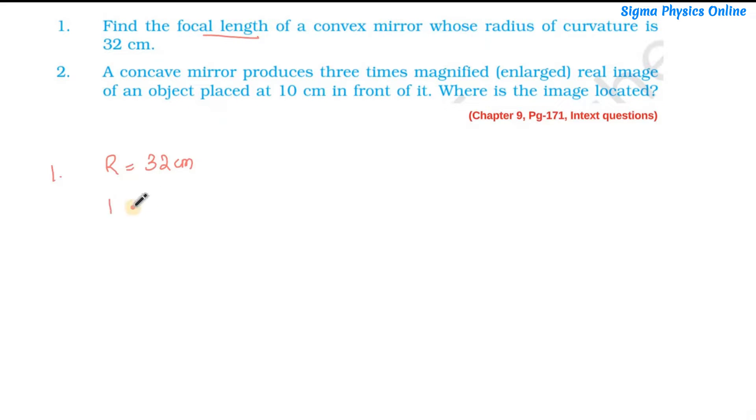Now we know that the radius of curvature is twice the focal length, so the focal length will be half of the radius of curvature. Here the radius of curvature is given as 32 cm, so I write 32 divided by 2, which equals 16 cm. So the focal length of this convex mirror is 16 cm.